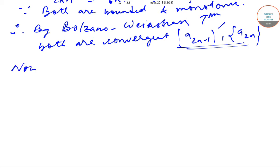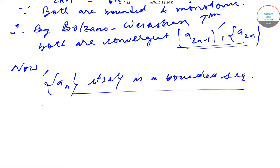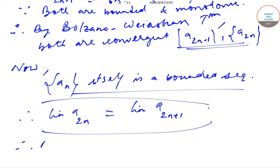Now we have also seen that if a_n, the sequence a_n itself, is a bounded sequence, that means it has a finite limit. So we can definitely say that limit of a_{2n} equals limit of a_{2n+1}. They are both equal, so both have the same limit.